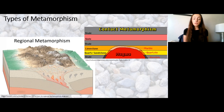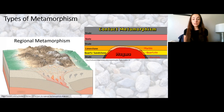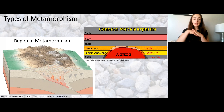Contact metamorphism doesn't subject the rocks to as high of pressures but still subjects them to high temperatures, because what happens is a magma body rising through the crust can come in contact with previous rock layers that it metamorphoses through contact with those layers. It's not metamorphosing the entire rock layers, but it's metamorphosing those rocks where they come in contact with that magma body.